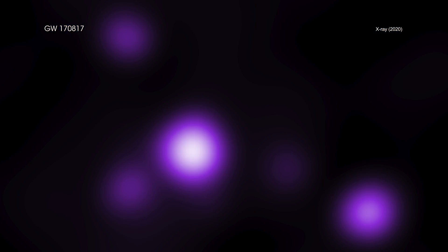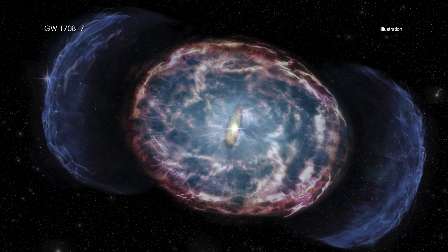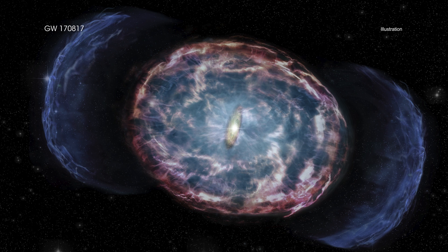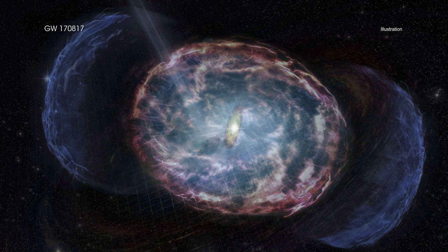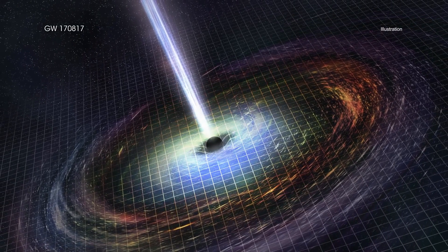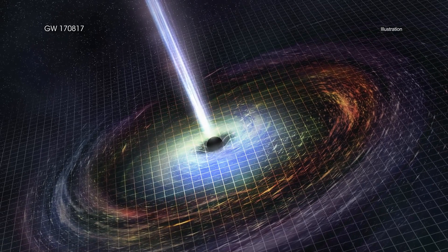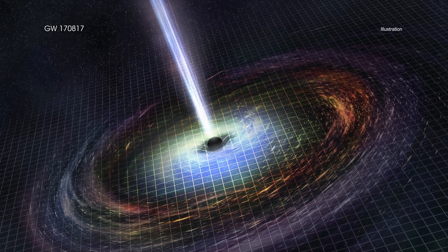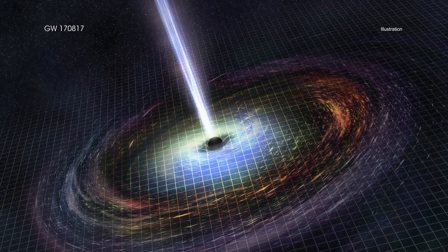To distinguish between the two explanations, astronomers will keep monitoring GW170817 in X-rays and radio waves. If it is a kilonova afterglow, the radio emission is expected to get brighter over time and be detected again in the next few months or years. If the explanation involves matter falling onto a newly formed black hole, then the X-ray output should stay steady or decline rapidly, and no radio emission will be detected over time.